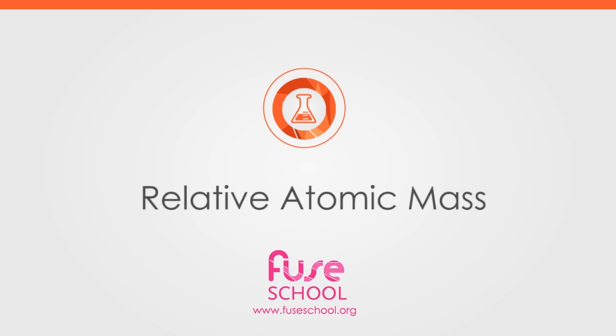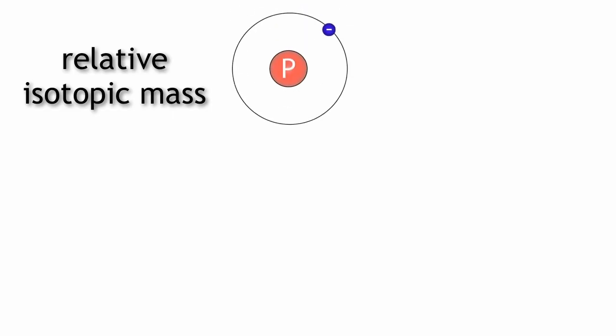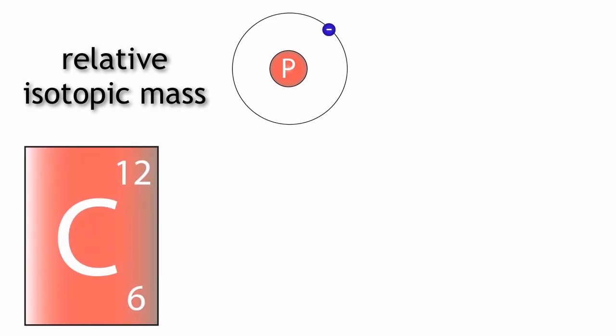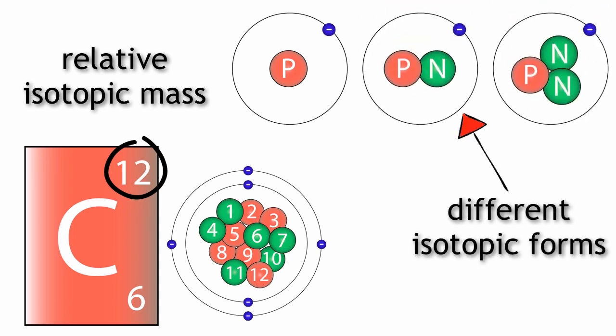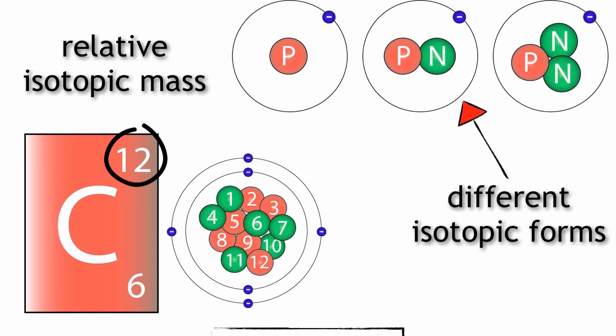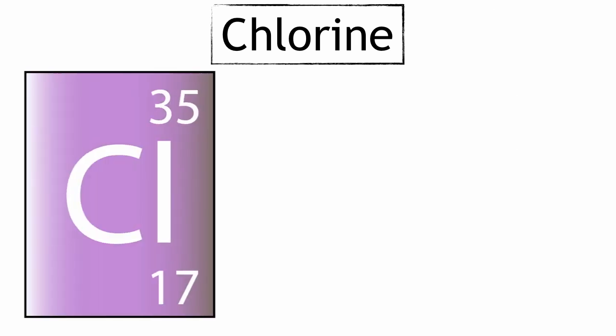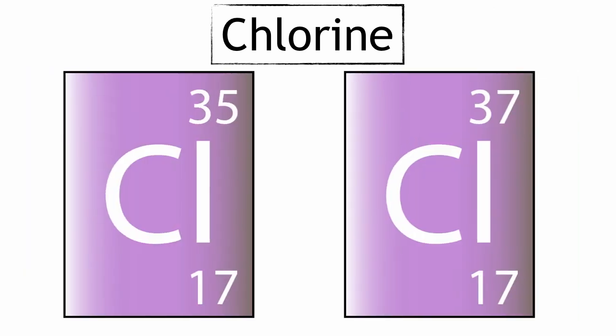The relative isotopic mass is the mass of an element in relation to carbon-12. The reason it is called the isotopic mass is because some elements have different isotopic forms. For example, chlorine can be found as chlorine-35 and chlorine-37.